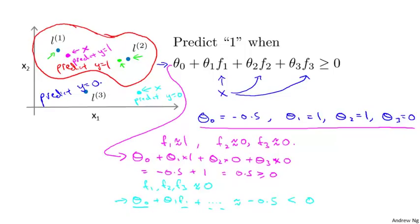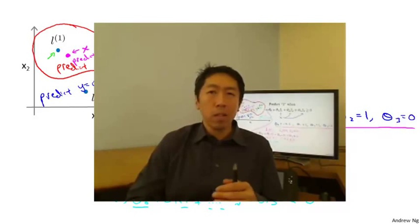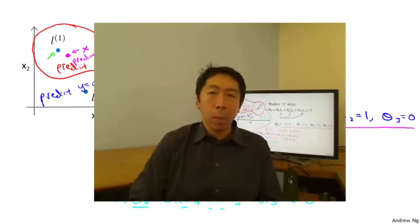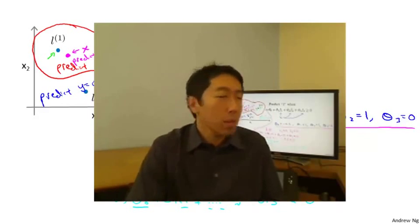This is how, with this definition of landmarks and the kernel function, we can learn a pretty complex nonlinear decision boundary, predicting positive when close to either landmark and negative when far away. This is part of the idea of kernels and how we use them with support vector machines — we define extra features using landmarks and similarity functions to learn more complex nonlinear classifiers. There are still open questions: how do we choose these landmarks, and what other similarity functions can we use besides the Gaussian kernel? The next video will answer these questions.